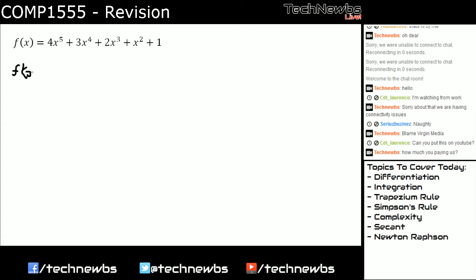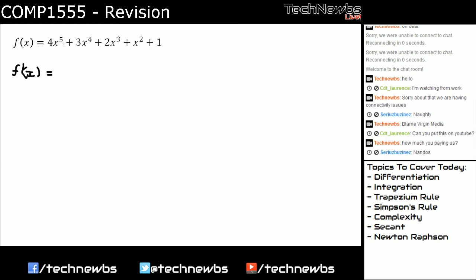So differentiation, you first times the power by the number at the bottom. So we'll do 4 times 5, which is 20. And then you lower the power by 1, so about 20 x to the power of 4. That's essentially it. Is this recording? Yeah, it will be on YouTube after. I've got the backup ready.